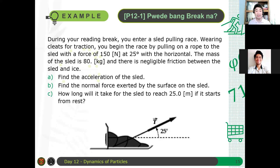The mass of the sled is 80 kg, and there is negligible friction between the sled and the ice. Letter A: find the acceleration of the sled. Letter B: find the normal force exerted by the surface on the sled. And letter C: how long will it take for the sled to reach 25 meters if it starts from rest? I'll give you maybe two minutes to think about how to solve this problem, and later I will discuss the solution.